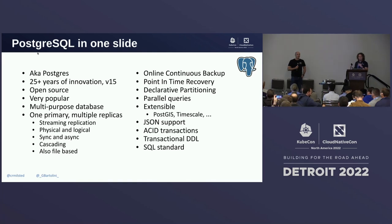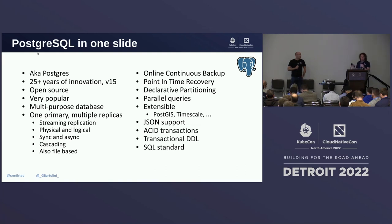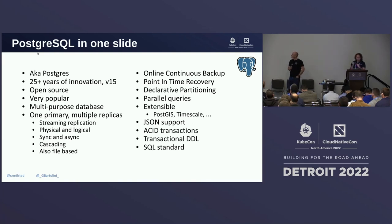My list of favorite features includes declarative partitioning for horizontal table partitioning, parallel queries for vertical scalability, extensibility — think about extensions like PostGIS for geographical databases — JSON support for multi-model hybrid databases, ACID transactions, transactional DDL, and SQL standard compliance. Obviously there are many more, but the project has been steadily innovating for at least 25-plus years, and the community just released version 15, with many contributions from EDB, which I'm really proud to say.